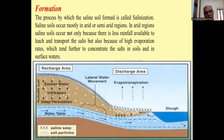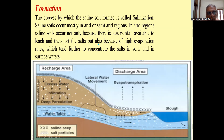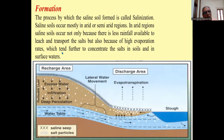Saline soil occurs mostly in arid or semi-arid regions. In arid regions, saline soil occurs not only because there is less rainfall available to leach and transport the salts, but also because of the high evaporation rate due to high heat, particularly in summer and monsoon season, which further concentrates salt in soil and surface water.